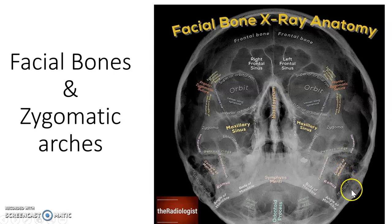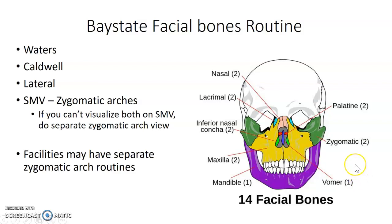We're starting on facial bones, including the zygomatic arches. Our clinical routine is a Waters, Caldwell, lateral, and SMV. If you can't visualize both zygomatic arches on the SMV, you'll do individual projections. Different facilities will have different routines — they may have a separate routine just for zygomatic arches — so make sure you check your routines wherever you're working.